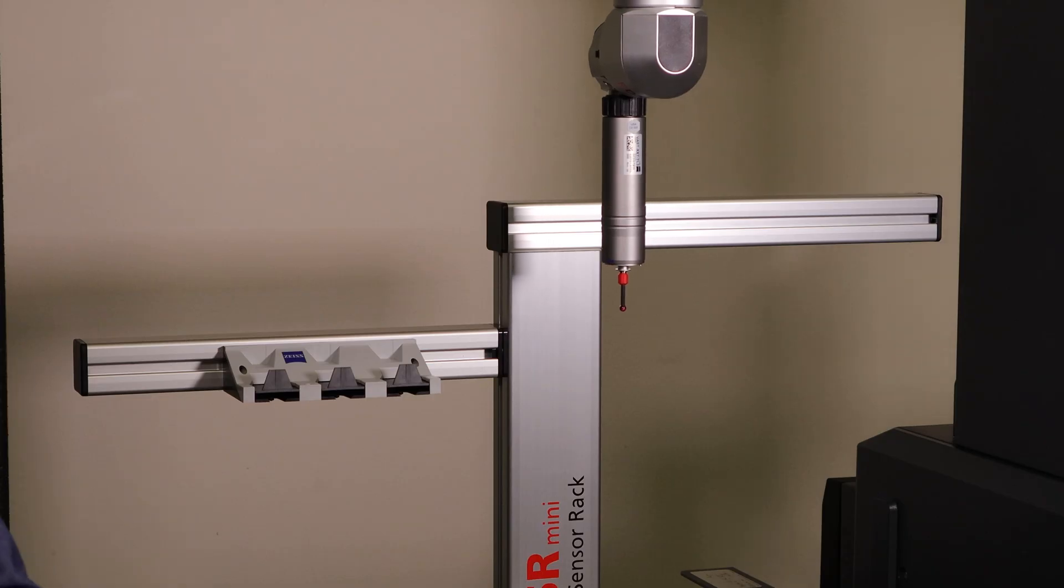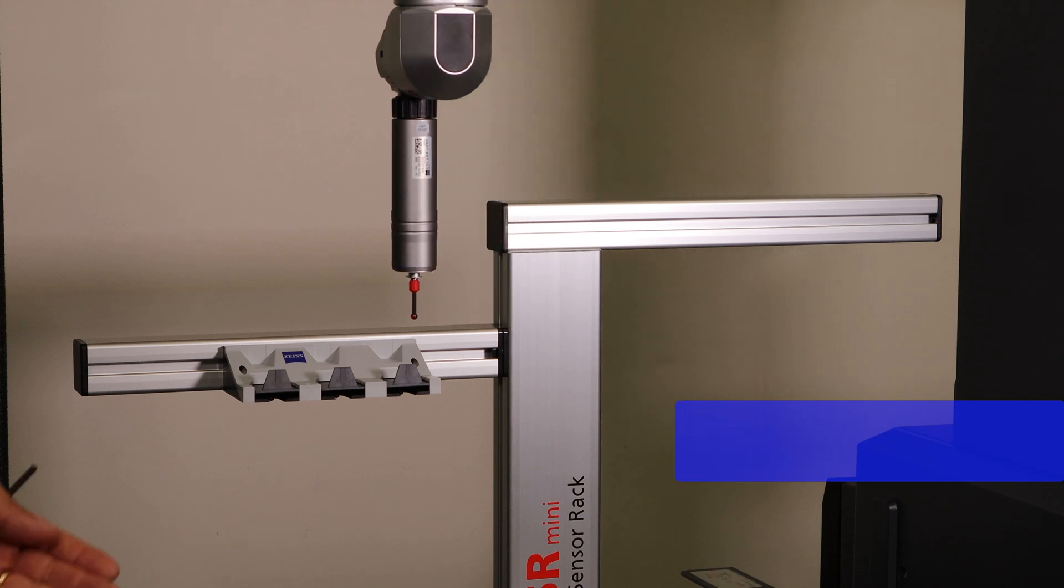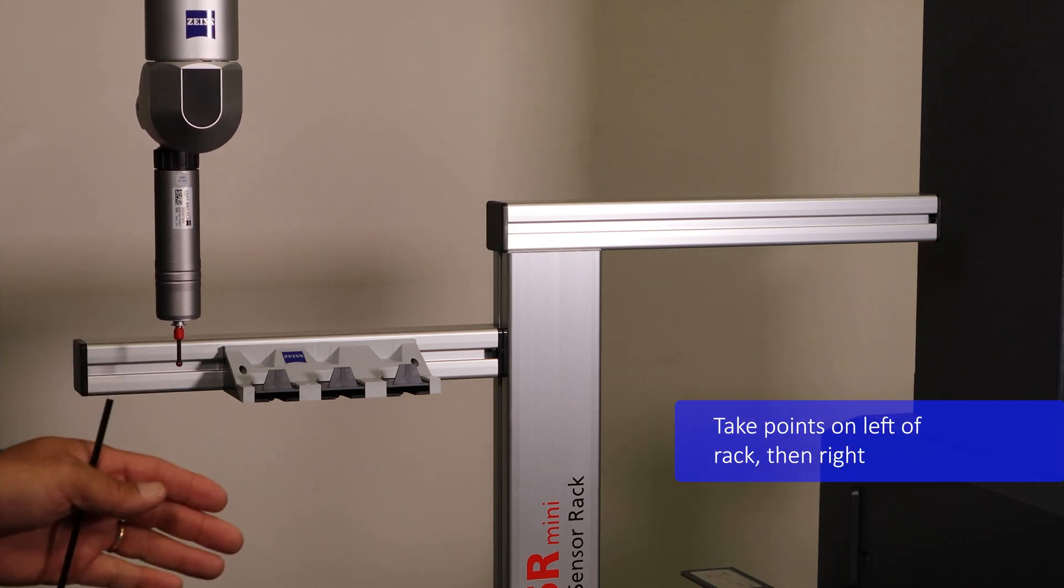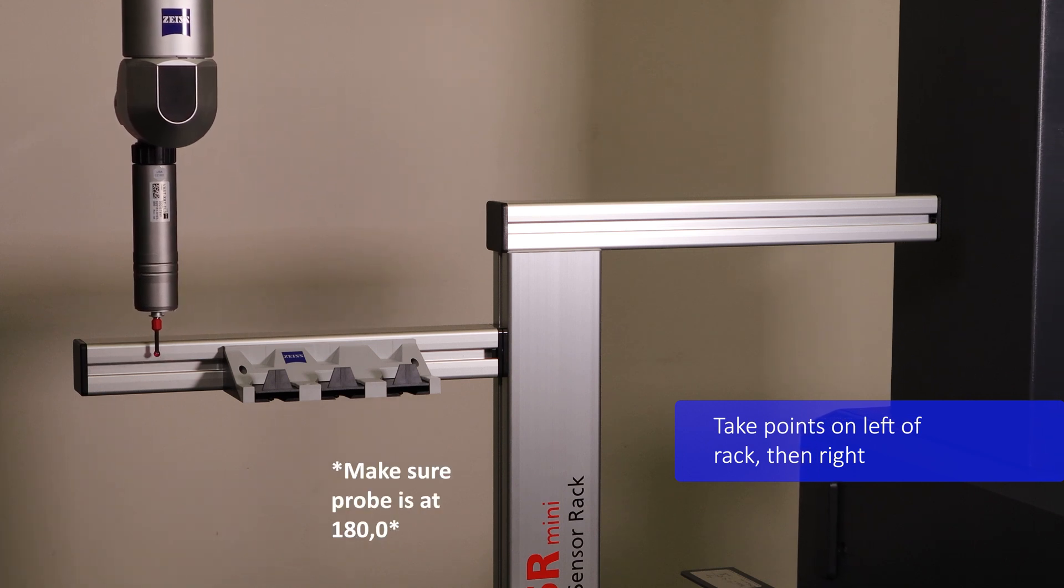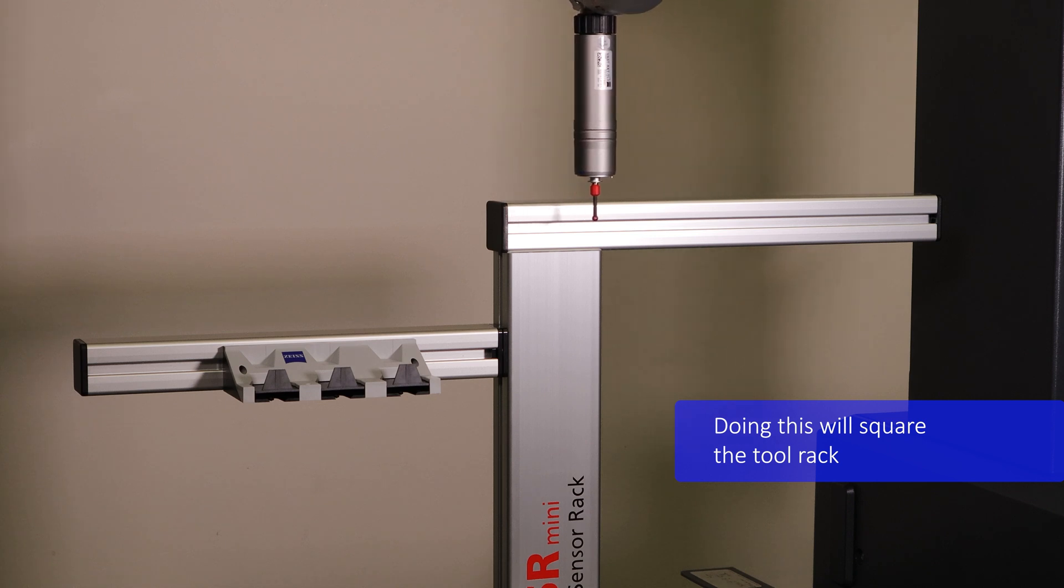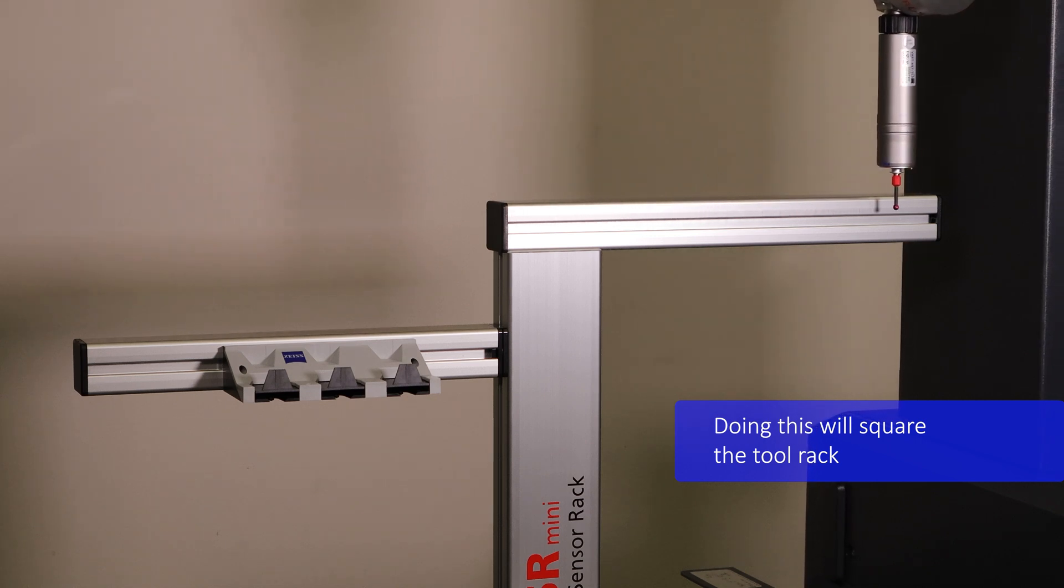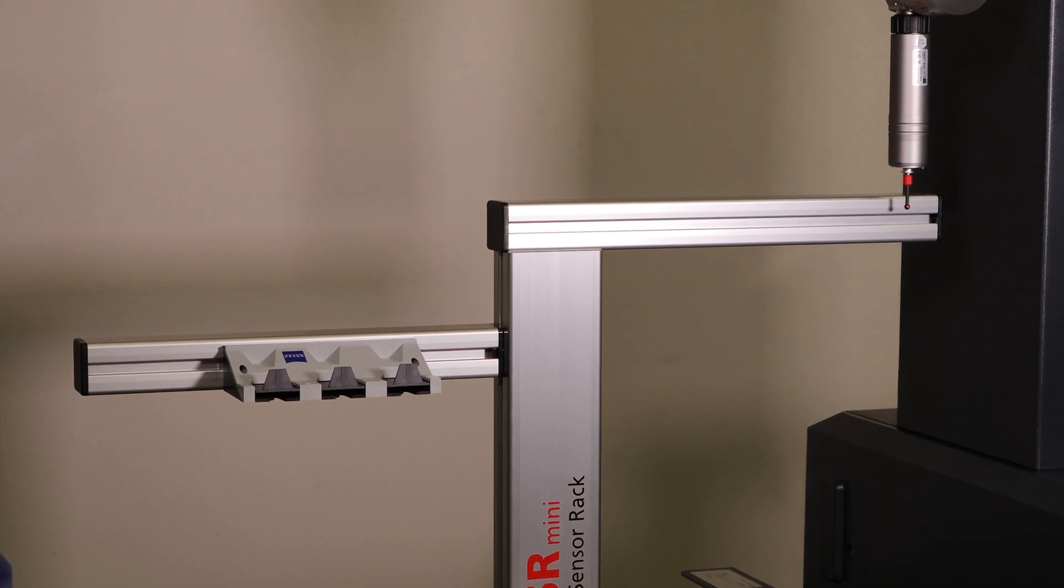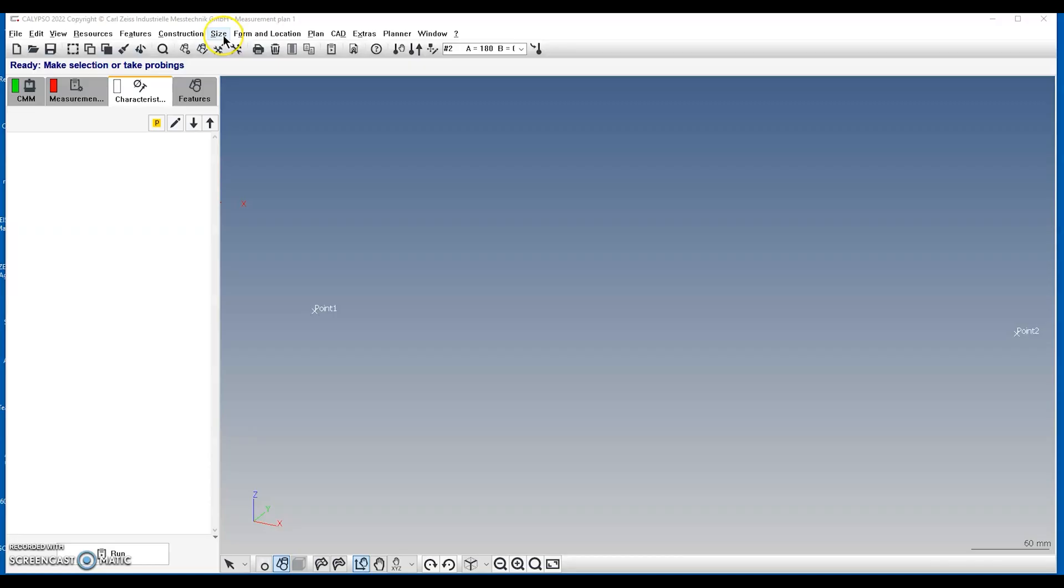Now that you've qualified your stylus and begun your new measurement plan, begin by taking points. Make sure the probe is at position 180 and 0, then take your first point on the left side of the machine and a second point on the right side. The process of probing points on the left and right side of the tool rack will be used to square the tool rack.